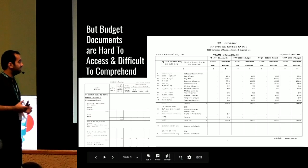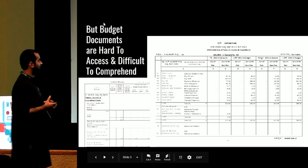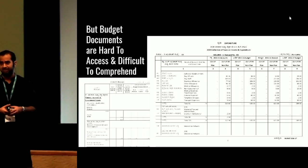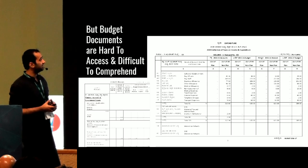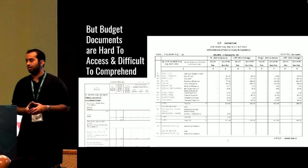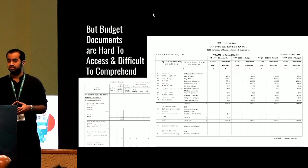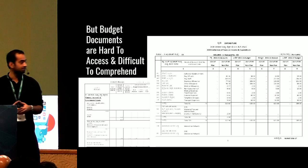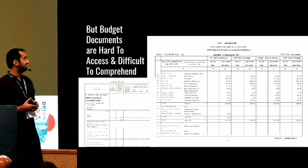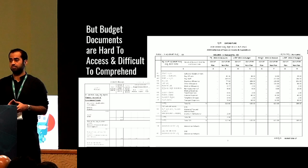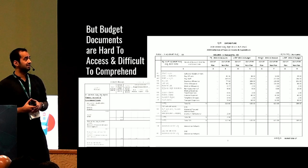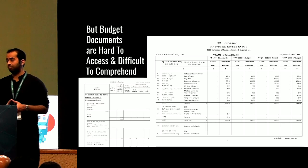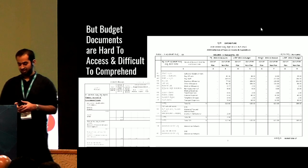But in India, the state of budget is something like this — they are very hard to access, very difficult to comprehend. It makes it really difficult to analyze them in time and make our priorities accordingly, in terms of analysis, reporting, and seeing where government priorities are fitting in. On your left you can see a budget of BBMP, and on the right is the budget of Karnataka state government. You can see the disparity in format and the structural difficulties involved.